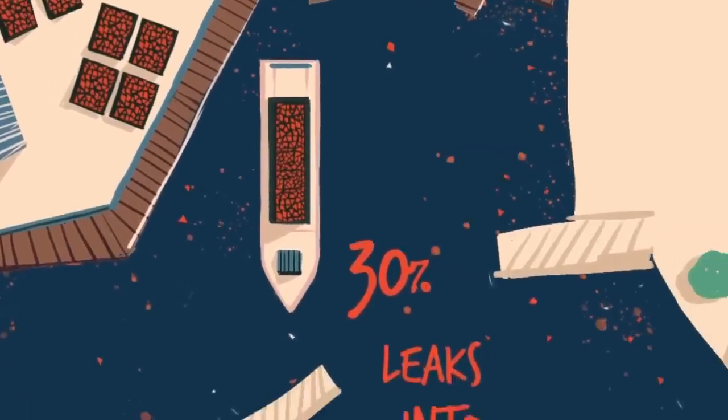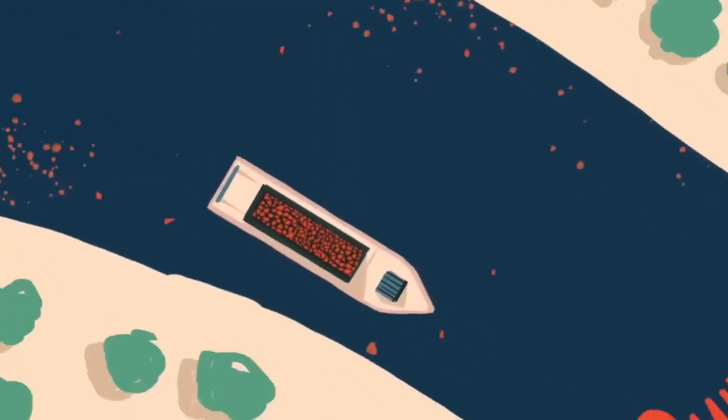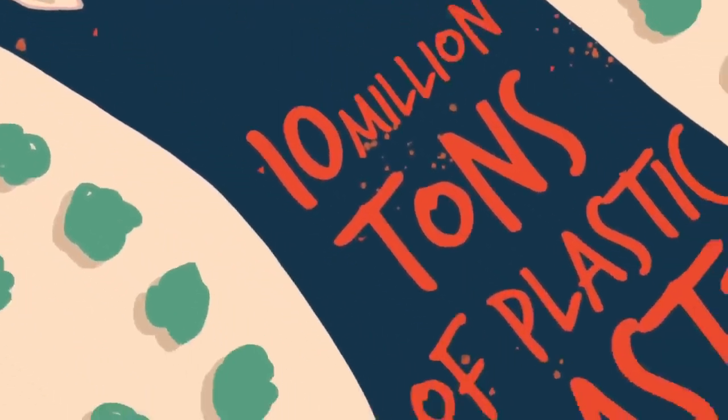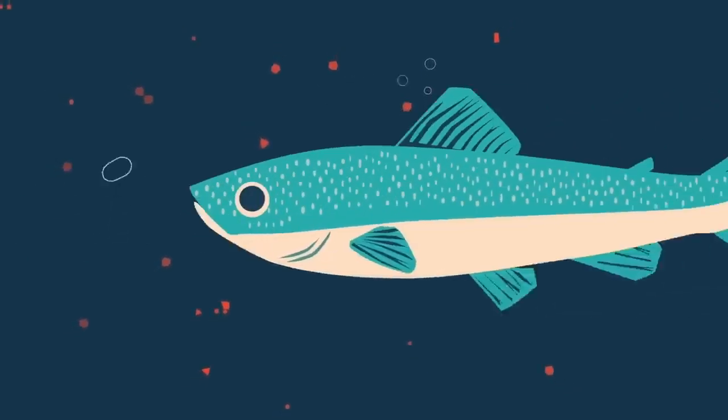And 30 percent leaks out into the environment, where it will pollute natural ecosystems for centuries. An estimated 10 million tons of plastic waste end up in the ocean each year, mostly in the form of microplastic fragments that pollute the food chain.